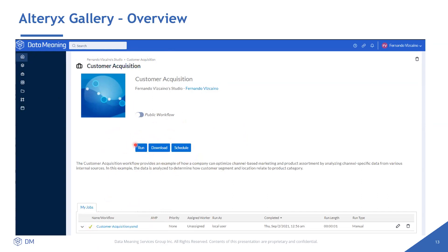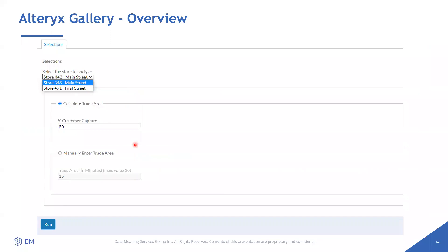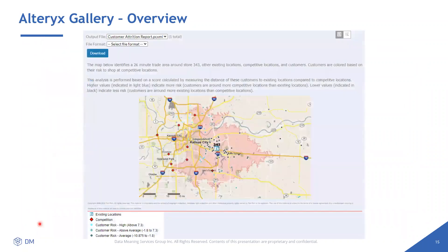When you click the run button, you can give the user the experience to select options — for example, selecting a trade area — and after clicking run, they can consume a report, a file, or it could be an email sent to someone's inbox, or a data source being updated.